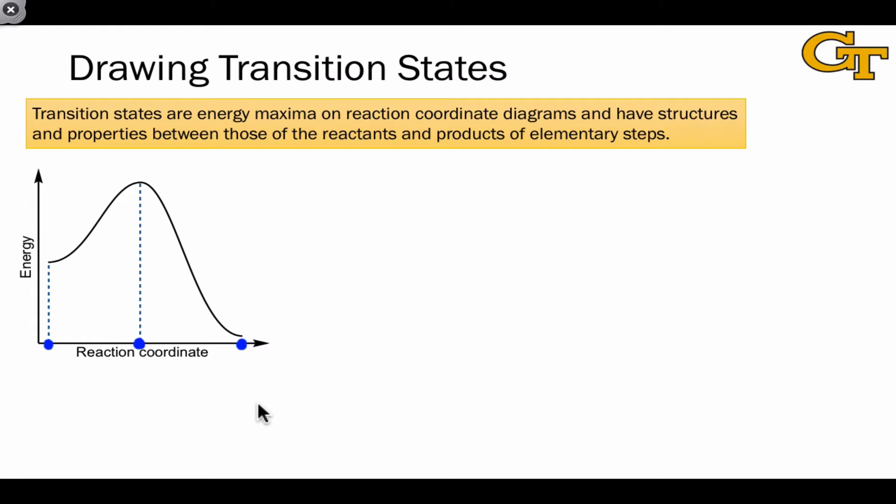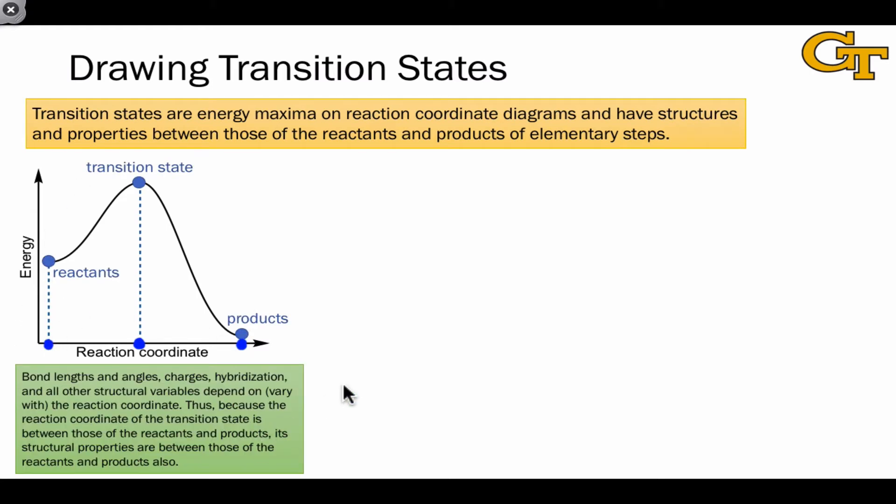This means that the structural properties of the transition state are intermediate between those of the reactants and products. And when we say structural properties, we mean everything from bond lengths and angles, to charges, to hybridization, to geometry, to any other structural variables that may be of interest.